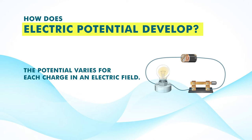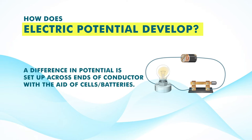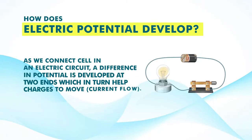The potential varies for each charge in an electric field. If there is a difference in potential across the conductor, current flows. A good experiment — which I will explain when talking about Ohm's law — involves increasing the number of cells or batteries at one end to create this potential difference. When a cell is connected in any electric circuit, a difference in potential is developed at the two ends, which helps move the charge — that is, it helps current flow.